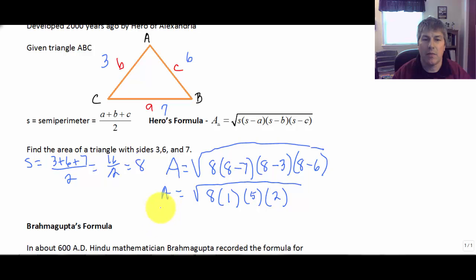So our area, if we want, since this is all multiplication, we could break this apart. Or we can multiply it together. That's the square root of 80. And 80 is equal to 16 times 5. So our area is equal to 4 square root of 5 units squared.